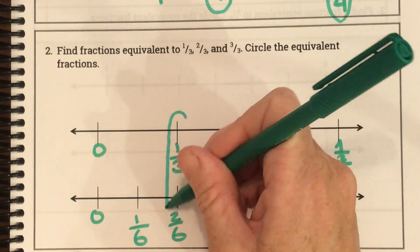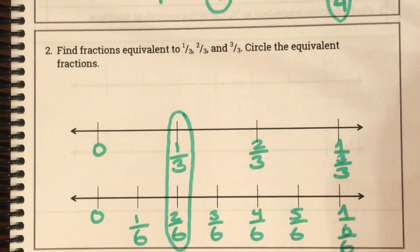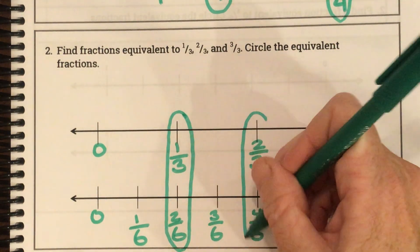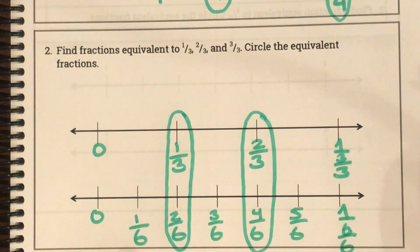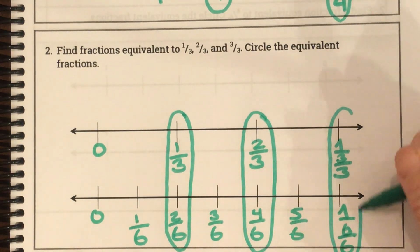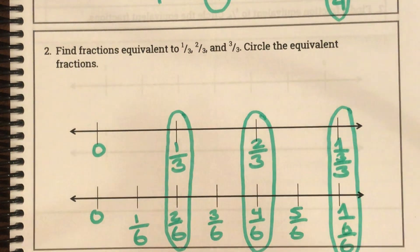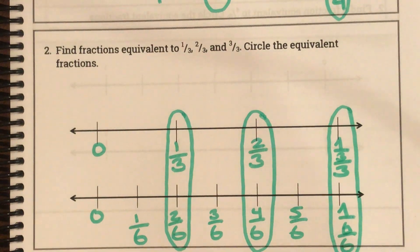One-third is equivalent to two-sixths. Two-thirds is equivalent to four-sixths. And three-thirds is equivalent to six-sixths. Ladies and gentlemen, let's have a great day. Keep practicing this and I'll see you tomorrow. Bye-bye!